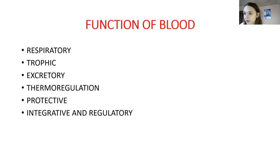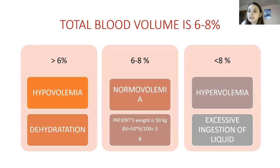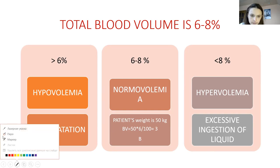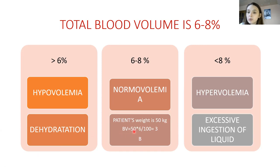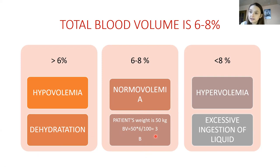What is the total blood volume? It is about 6 to 8 percent of body weight, which is called normal volume. To calculate the blood volume: if a patient's weight is 50 kilograms, blood volume equals 50 multiplied by 6 percent divided by 100, which gives approximately 3 liters. Alternatively, you can use 8 percent in the same formula.